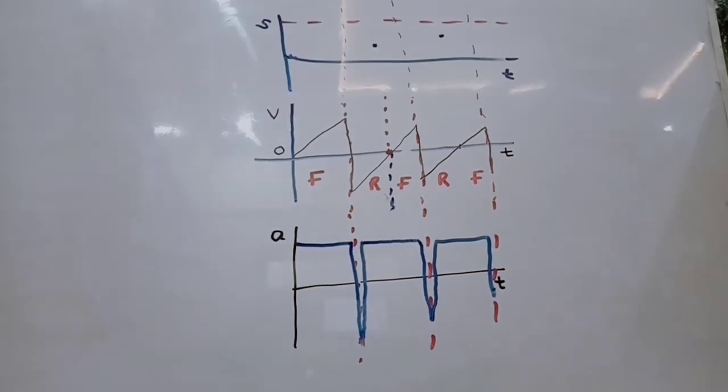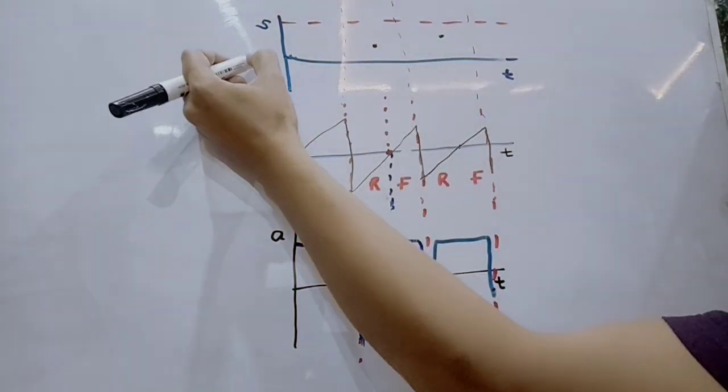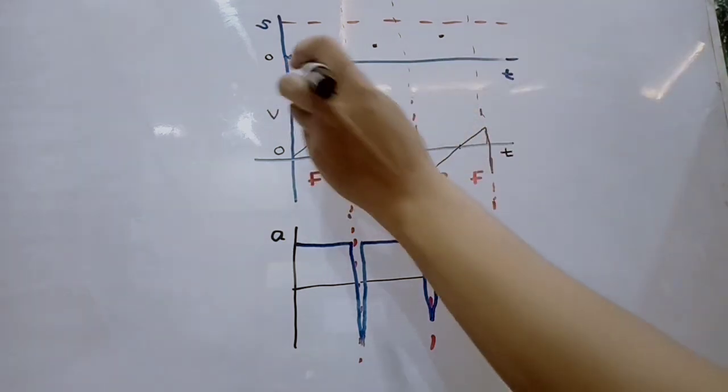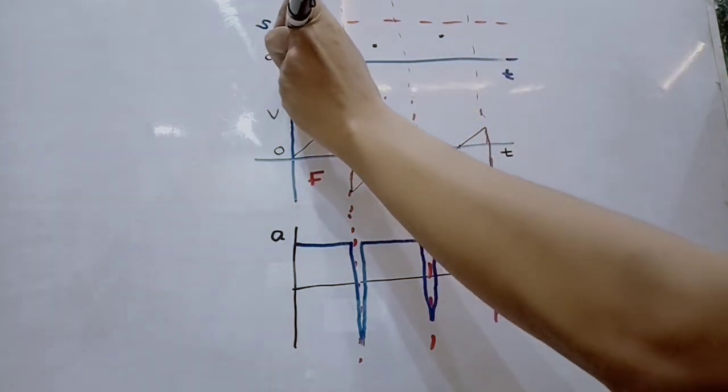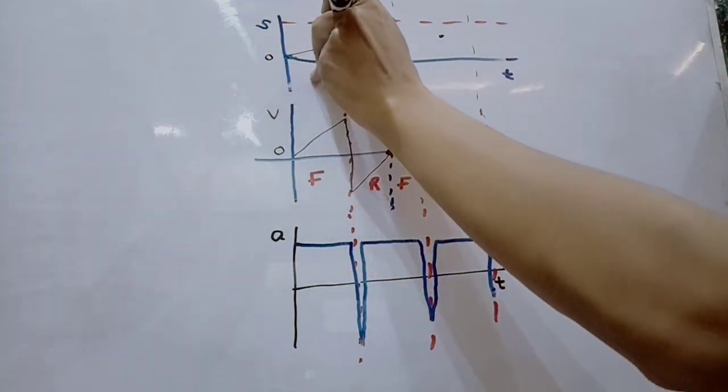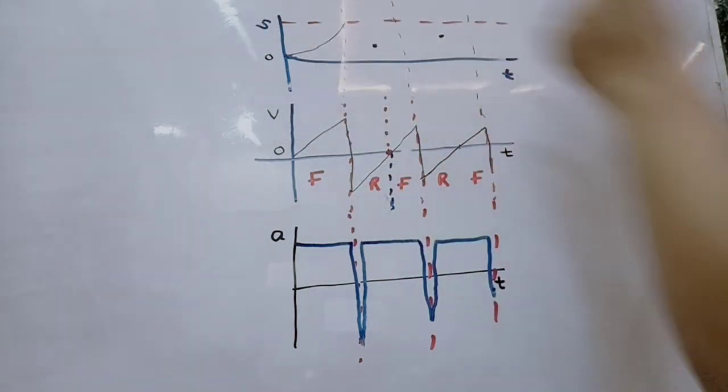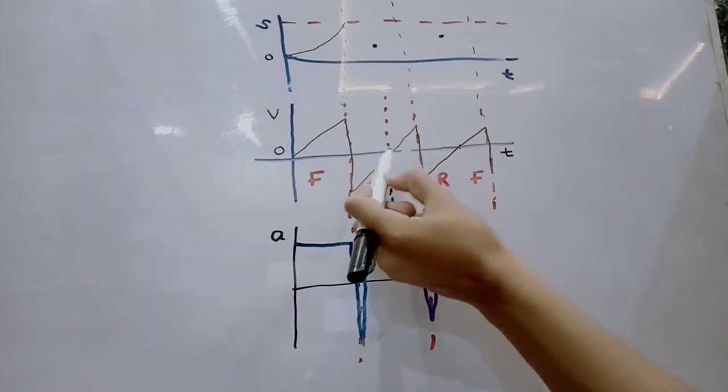Now we can sketch the displacement-time graph. From the point it was released, we assume displacement is zero. The displacement increases like this. The velocity is uniform, and at this point the velocity is zero, so we can draw a minimum point over here.